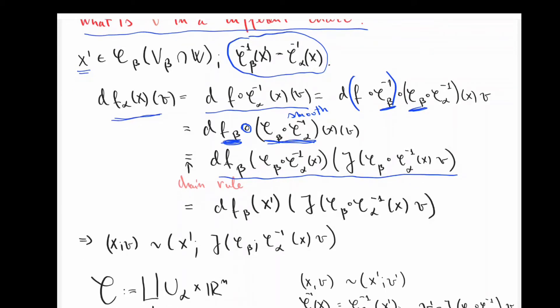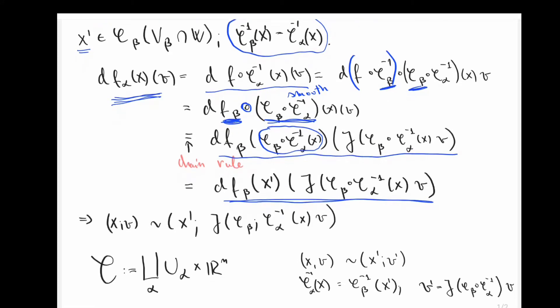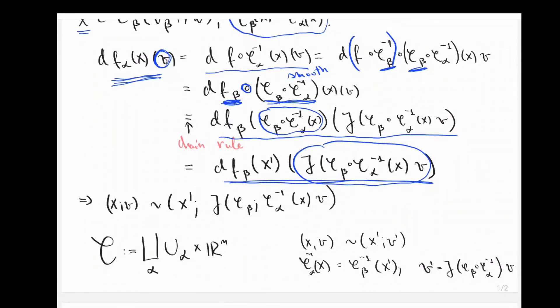So in other words, I get that this expression here is equal to this expression. Now, if you look at this point here, phi beta composed with phi alpha inverse x, well, that's nothing but x prime. So what you get to understand is that this vector v corresponds to this vector when you go from the alpha chart to the beta chart. So from the point of view of doing calculus with partial derivatives, really this vector v in the phi alpha chart should correspond to this vector v prime in the phi beta chart.